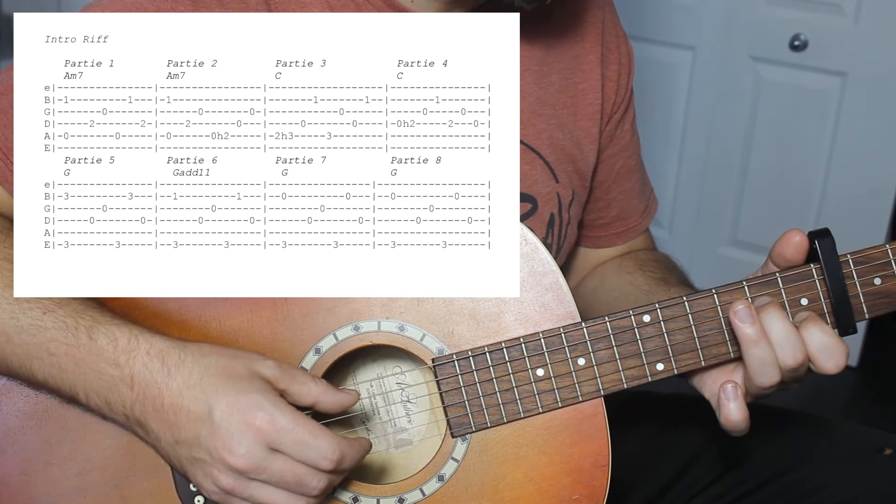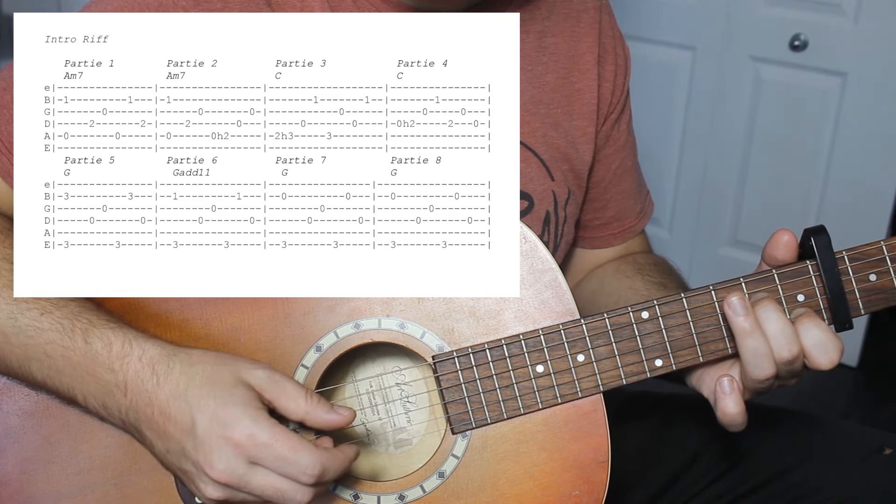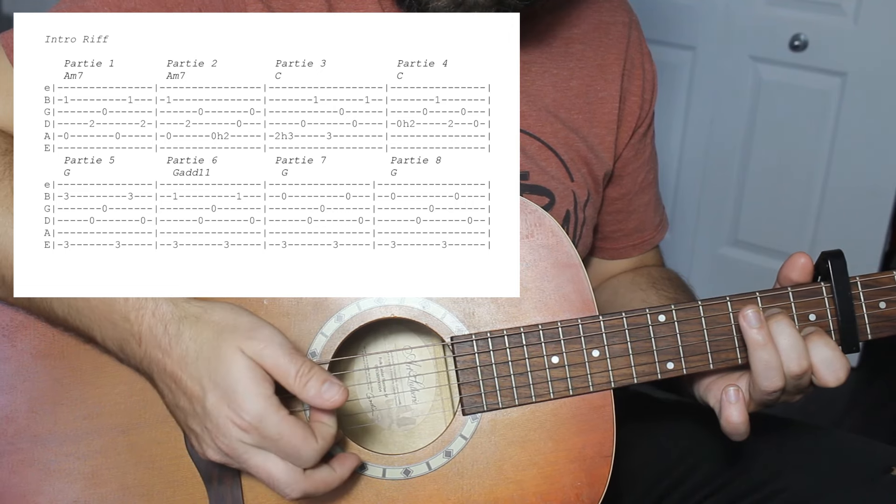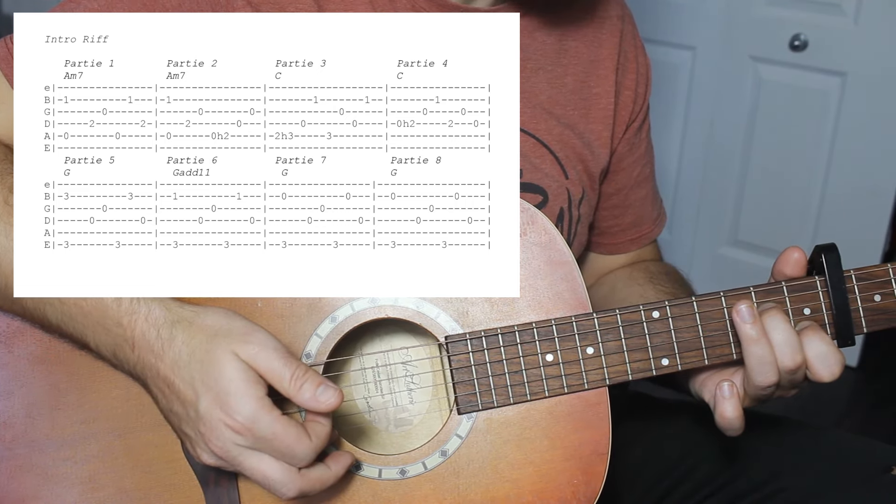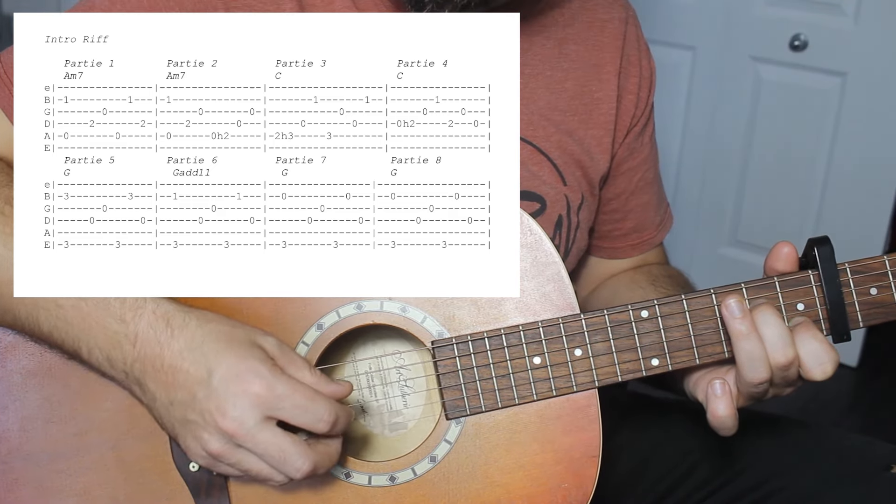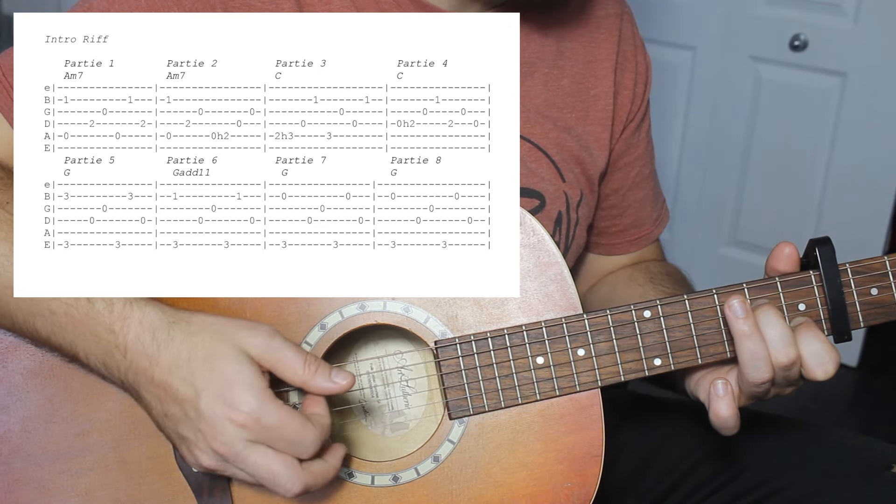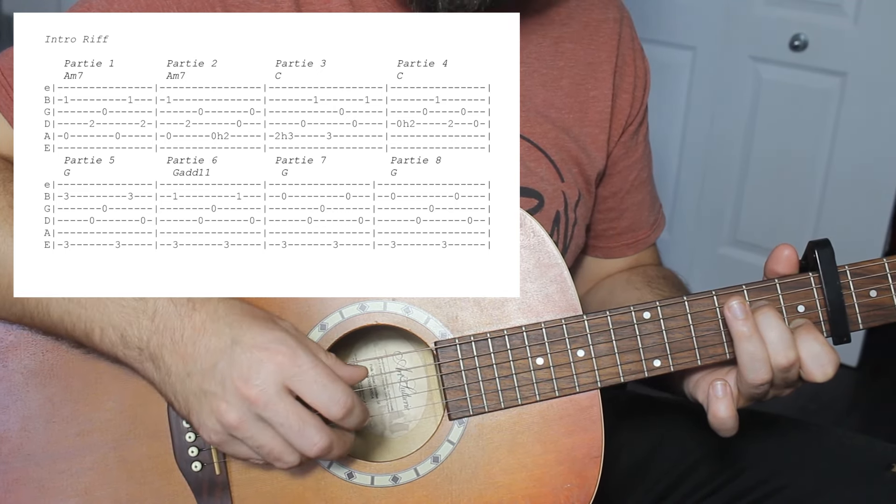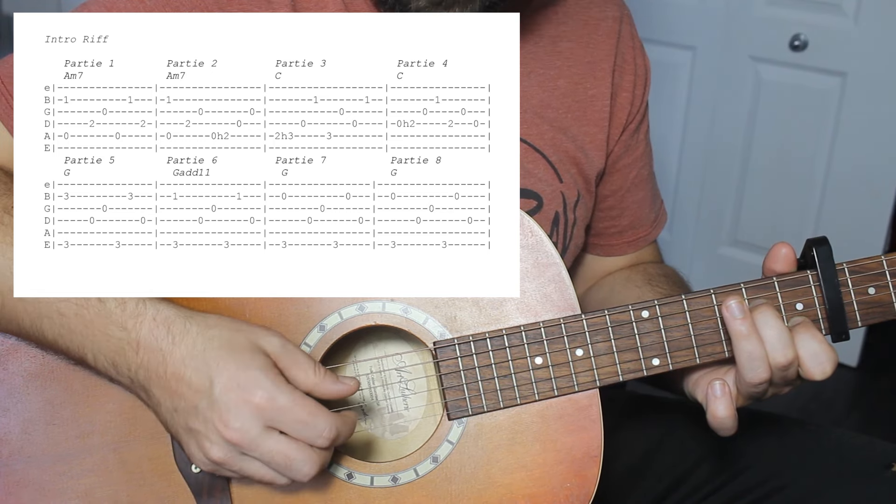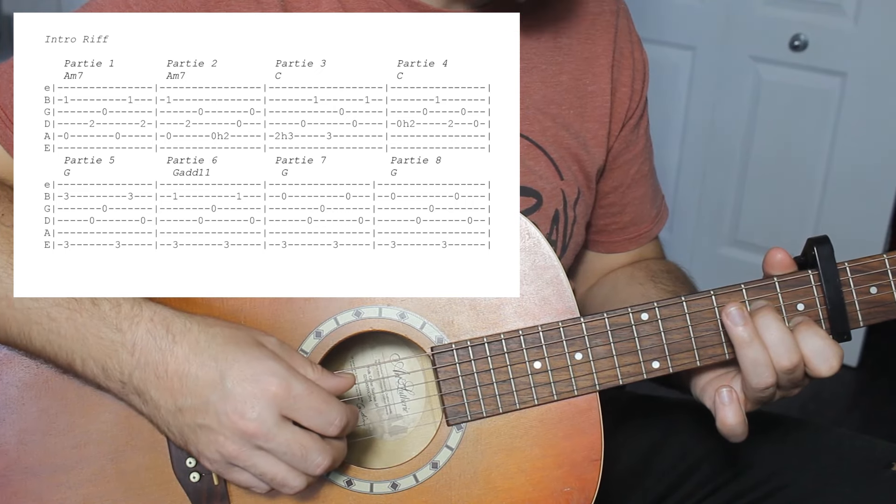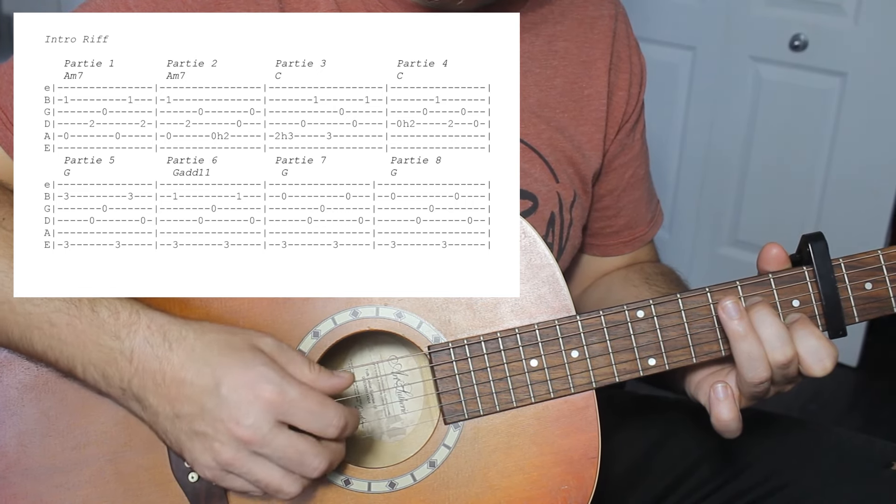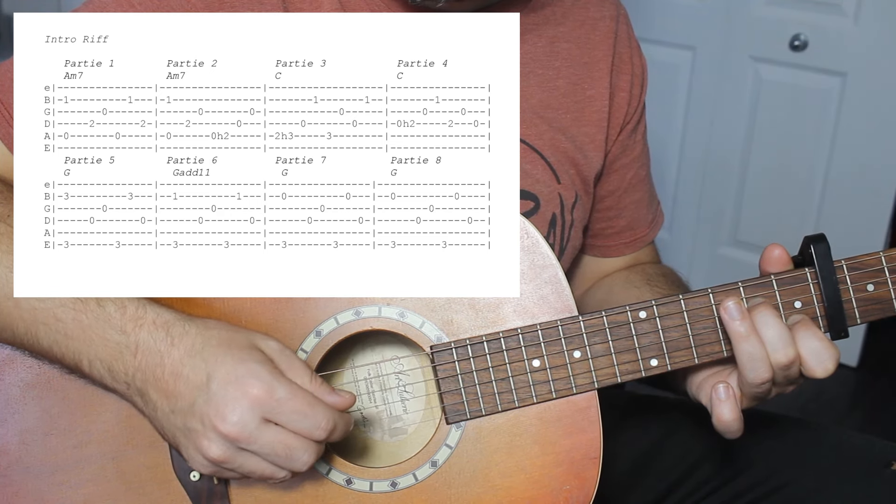Maintenant, on vient chercher corde 5 et 2. Ensuite, avec le pouce, on va chercher corde 4. Et corde 3 avec le doigt numéro 1. Ensuite, on revient avec le pouce chercher 5. Ensuite, on revient chercher la corde 2. Et on revient chercher la corde 4. Lentement. Ça, c'est le Travis Picking.